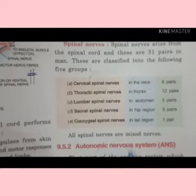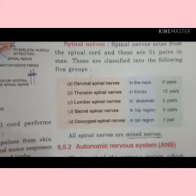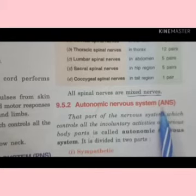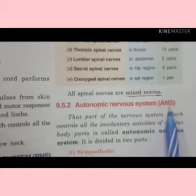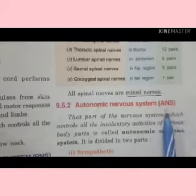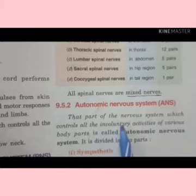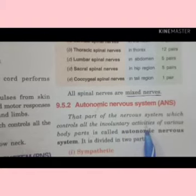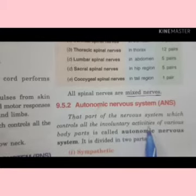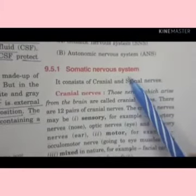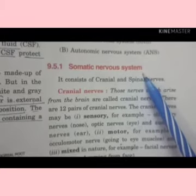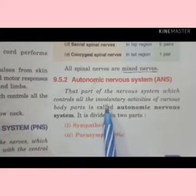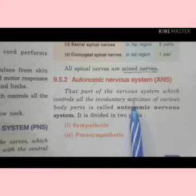All spinal nerves are mixed nerves. Next is the autonomic nervous system, also known as ANS. Remember: CNS is the central nervous system, PNS is the peripheral nervous system, and ANS is the autonomic nervous system. The autonomic nervous system controls all involuntary activities — those which are not under our control. The somatic nervous system controls voluntary activities, while the autonomic nervous system controls involuntary activities.